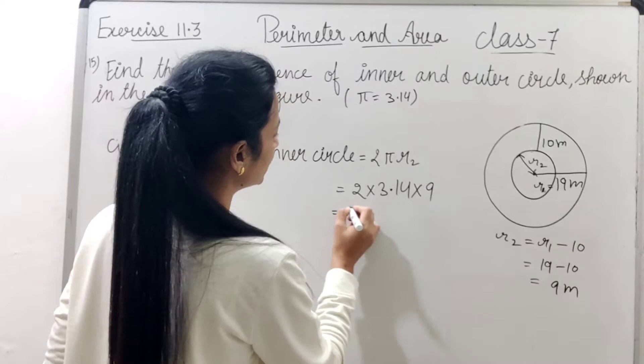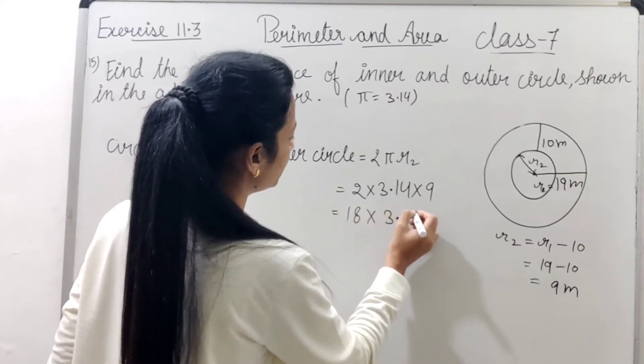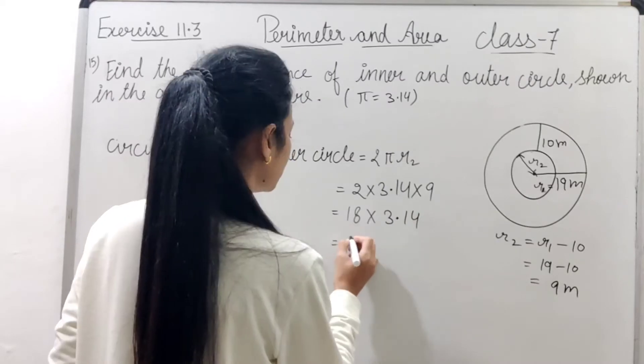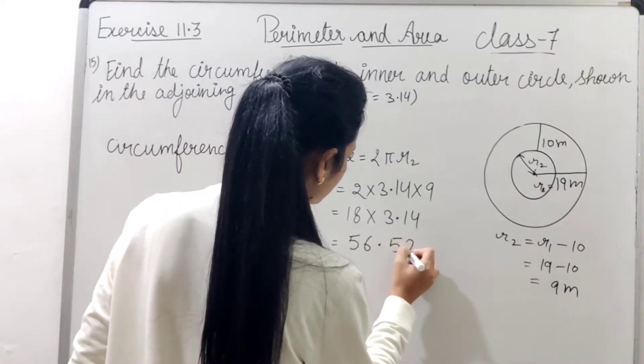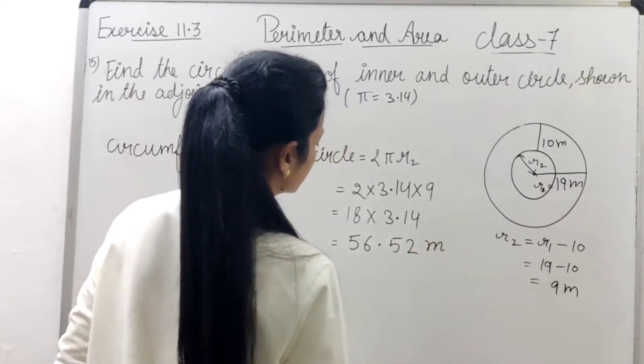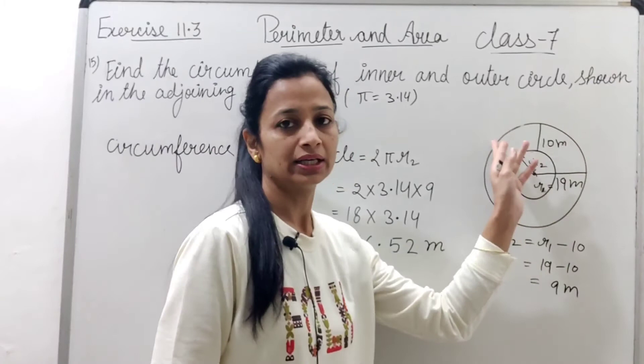और इसको calculate कर लेंगे तो 18 into 3.14, we'll get 56.52 meters. यह किसकी circumference है? Inner circle की. ठीक है?